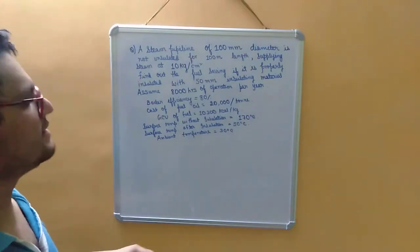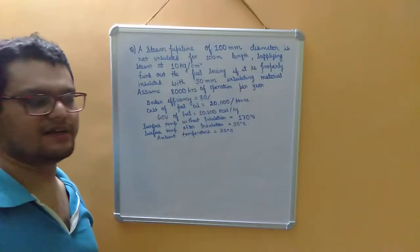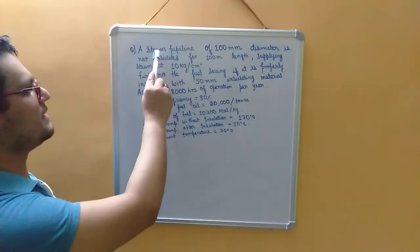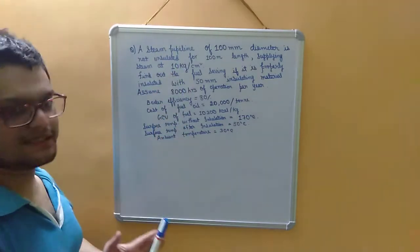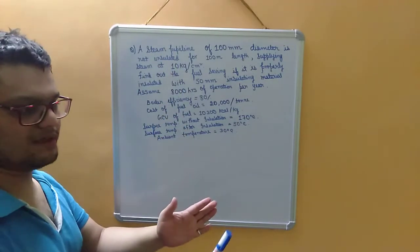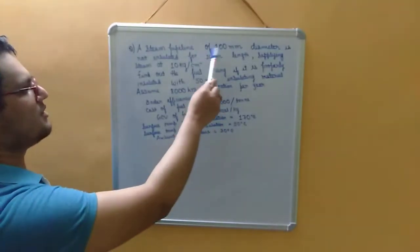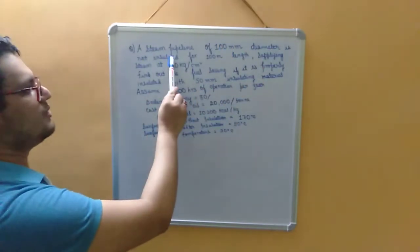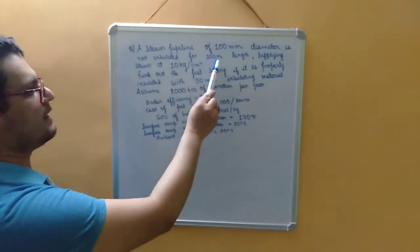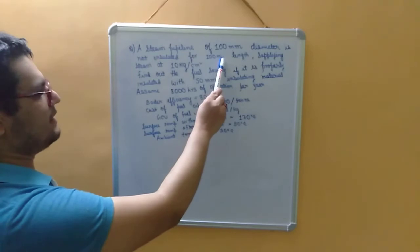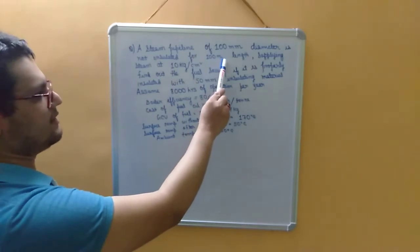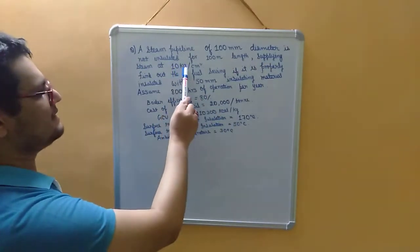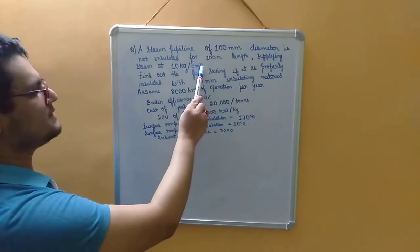We continue with the numericals based on insulators and refractories. The problem involves a steam pipeline of 100 millimeter diameter and 100 millimeter length, supplying steam at 10 kg per centimeter square.